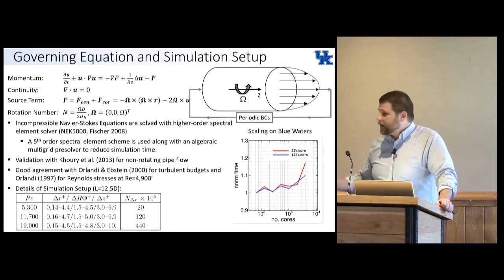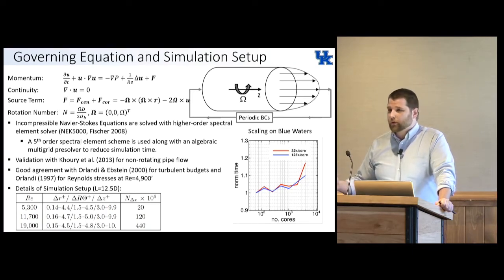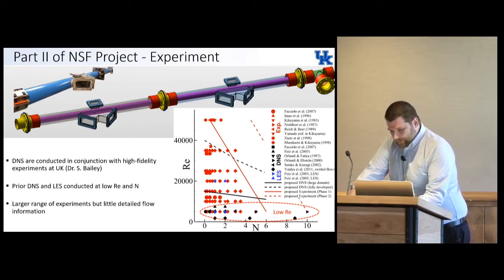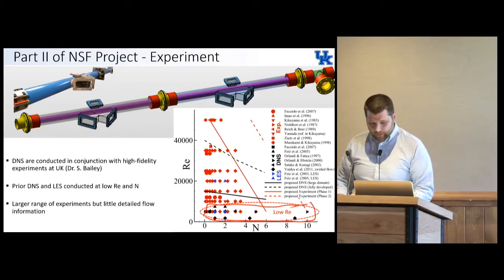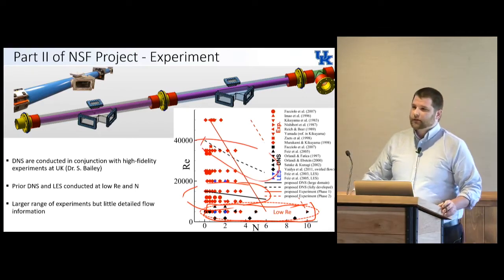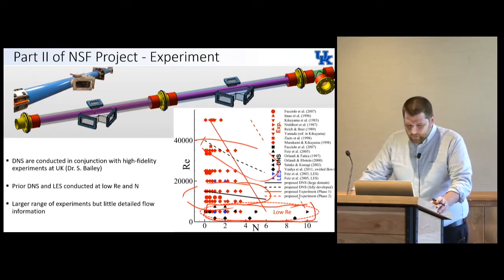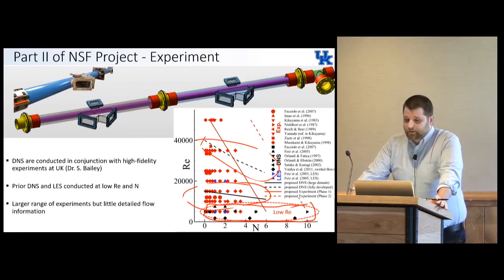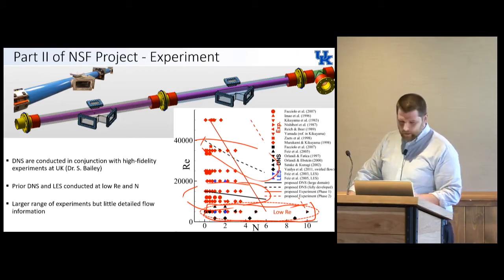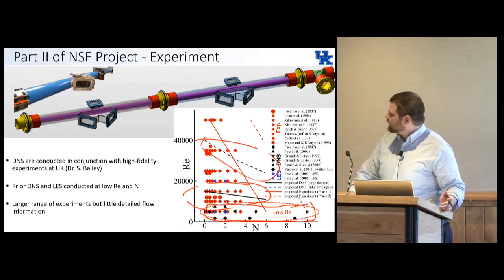We did some scaling on Blue Waters and found that the node ranges we needed scaled pretty well. This allows us to move the current DNS out of the low Reynolds number range conducted in the past and up to higher — and eventually very high — Reynolds numbers. We're doing this in conjunction with experimental work currently being conducted at the University of Kentucky under Sean Bailey, and you can see some of his experimental apparatus at the top.